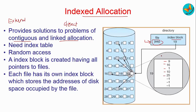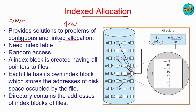Indexed allocation overcomes the disadvantages of both contiguous and linked allocation, so it is mostly preferred over the other two. To recap: contiguous allocation suffers from external fragmentation because memory is wasted; linked allocation cannot be used for direct access files. Both these drawbacks are overcome by creating an index table where for every file an index block is created, consisting of pointers to various disk blocks within that file. This is all about file allocation methods.